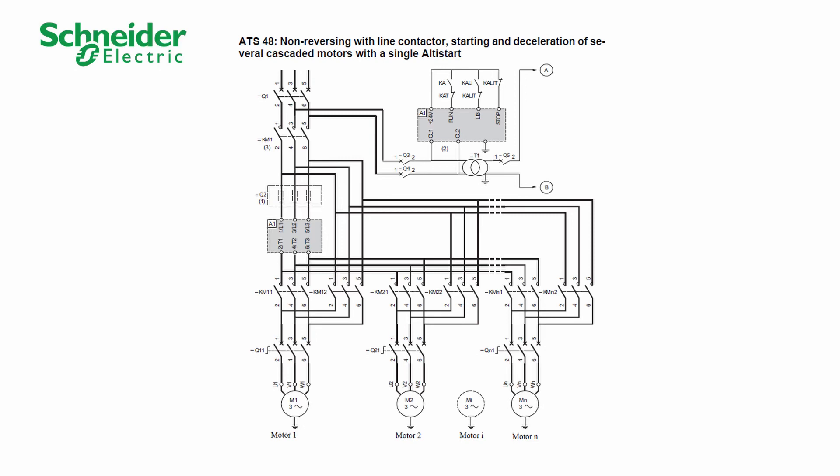Now we start the motor by closing KM1, KM11 and Q11 for the main supply, followed by KA for the Run command. The motor M1 starts following the parameters of the soft starter.